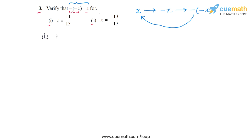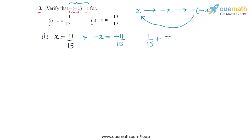In part 1, the rational number is 11 by 15. What is the additive inverse of 11 by 15? The additive inverse, minus x, will be equal to minus 11 by 15, because you just flip the sign of the numerator. You can verify: 11 by 15 plus minus 11 by 15 gives you 0, since the numerators add to 0. This is your x and this is your negative x, so x plus negative x equals 0.